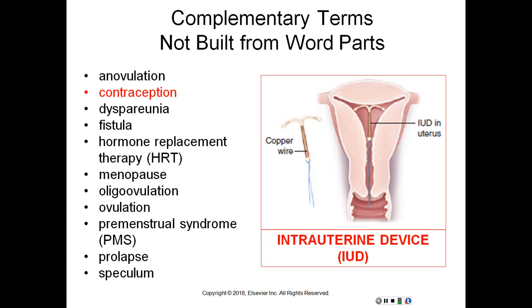Hormone replacement therapy – replacement of hormones, estrogen and progesterone, to treat symptoms associated with menopause. Menopause – cessation of menstruation, usually around ages 48 to 53, but may be induced earlier surgically if the woman has a bilateral oophorectomy, or medically, which could be a side effect of chemotherapy.